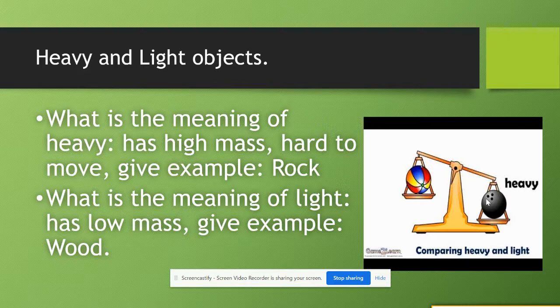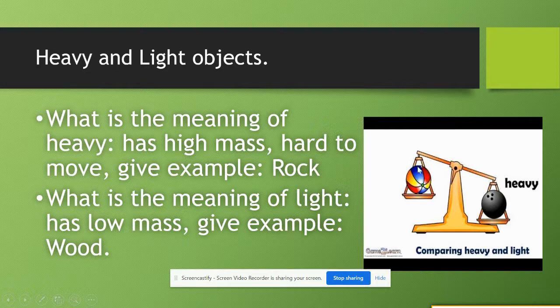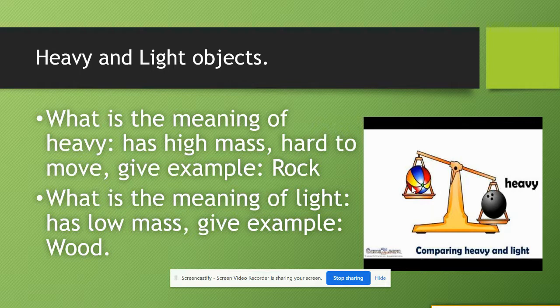What is the meaning of a light object? When it has low mass the balance will go up and of course easy to move it, like a small piece of wood for example or a ball.